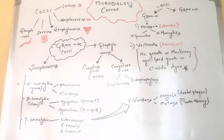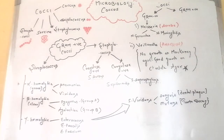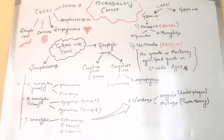As newborn babies have a poorly developed immune system, strep B infection can quickly spread through the body causing serious infections such as meningitis and pneumonia. Symptoms of strep B infection in a newborn usually develop within the first few hours or days after birth and include poor feeding, grunting when breathing, irritability, unusually high or low temperature, and unusual fast or slow breathing and heart rate. In some cases, a baby can pick up a strep B infection a few weeks or months after birth — this is not related to infection during birth.